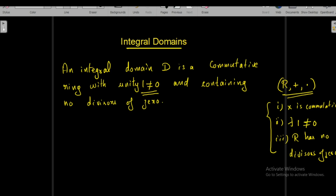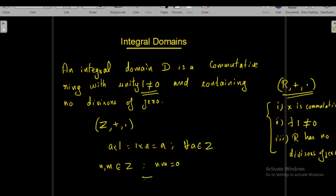The most common example is the set of all integers ℤ with addition and multiplication. Multiplication in ℤ is commutative, the multiplicative identity is 1 since a·1 = 1·a = a for all a in ℤ. Also, if n·m = 0 in ℤ, then either n = 0 or m = 0. Therefore ℤ with addition and multiplication satisfies all properties of an integral domain.